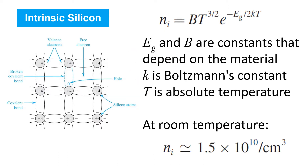In pure intrinsic silicon, only a very small fraction of electrons become free electrons. The precise concentration of free electrons in intrinsic silicon is governed by this equation. You can see that it depends on the absolute temperature T. There are also some material constants here — E, G, and B — that depend on the semiconductor material itself, silicon in this case. K is Boltzmann's constant, so that's an absolute constant.